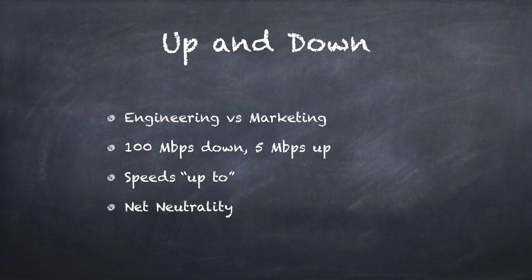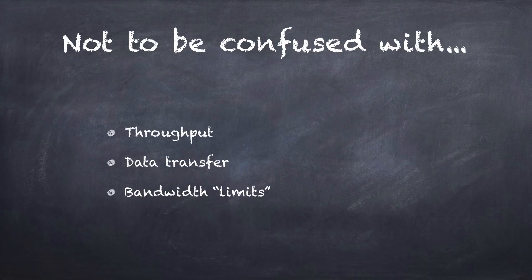People often confuse bandwidth with other things. One example is throughput, which is kind of like average speed. Your throughput is your average speed, while your bandwidth is what you actually have right now. So your bandwidth right now may be slower than normal, but your throughput is just your average.